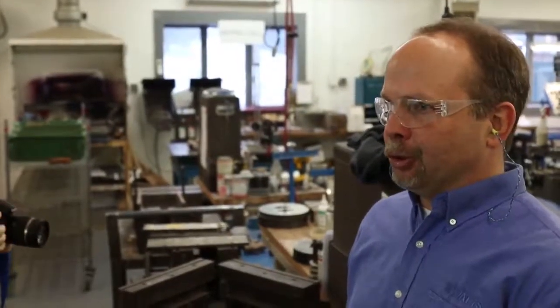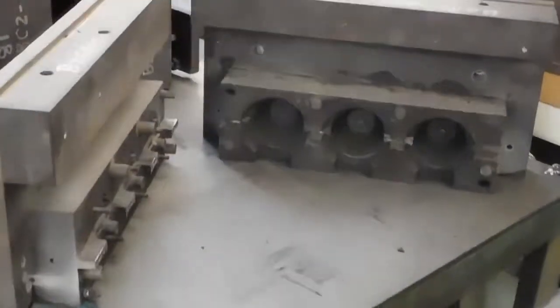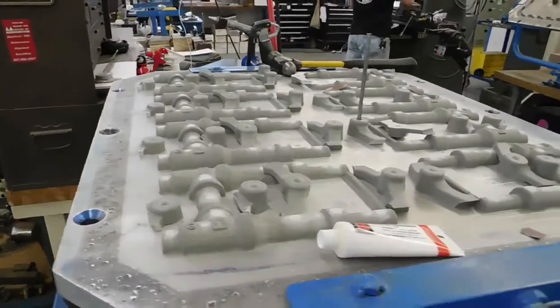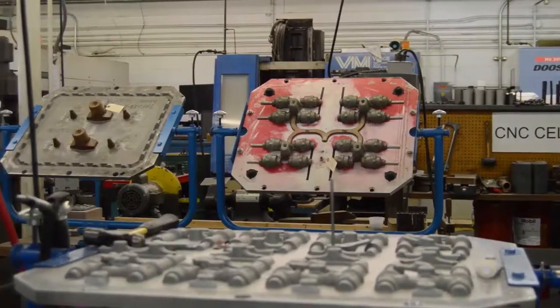These molds consist of two parts. We make core boxes which make the cores which define the internal shape of the casting. And we also make pattern plates which are what defines the outside shape of the casting.